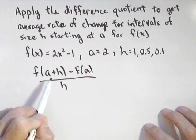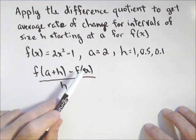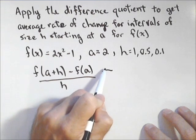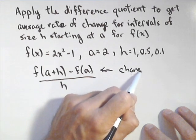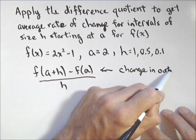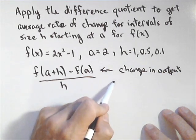What this does is this calculates the average rate of change between a and a plus h, because on top, we have our change in output, and on bottom, we have our change in input.